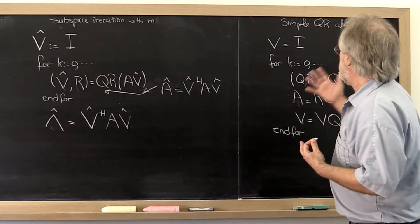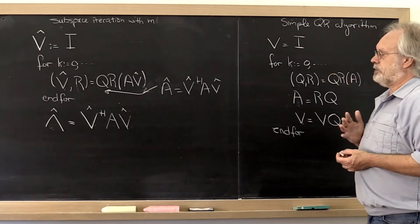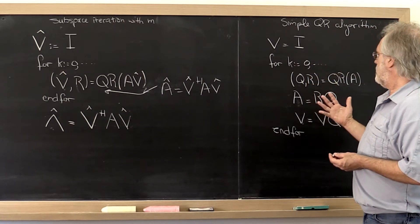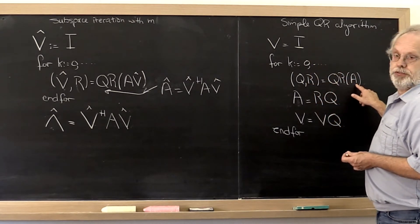So how can we think of this QR algorithm? Well, one way to think about it is that we do a QR factorization of A.